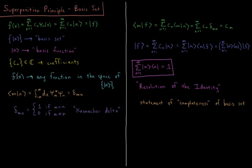If we have f of x, which satisfies the same boundary conditions as all the basis functions, is in the same number of variables, and has the same dimensionality, then f of x can be any function in what is called the space of the basis set. These basis functions can represent any function in their space.